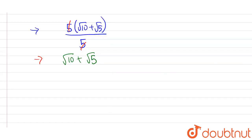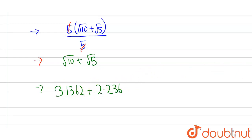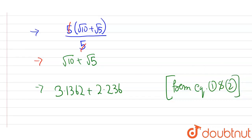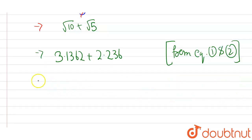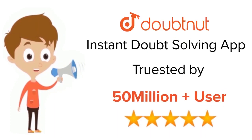Using equations 1 and 2, this becomes 3.1362 (the value of √10) + 2.236 (the value of √5). Adding these gives 5.3722, which is the final answer.